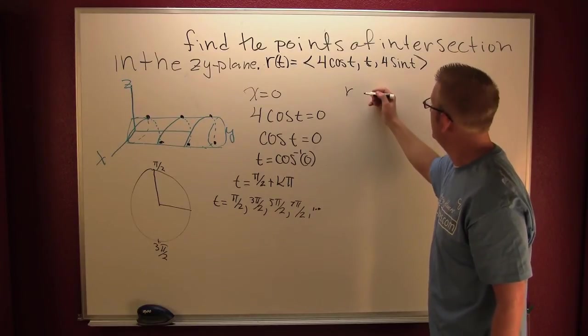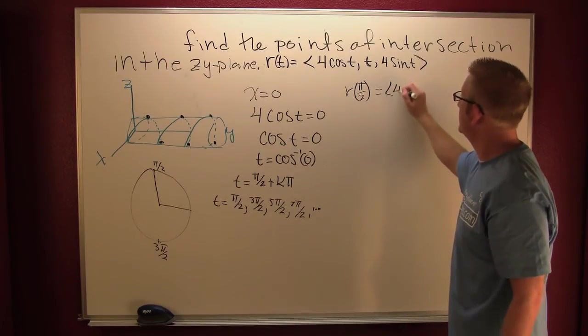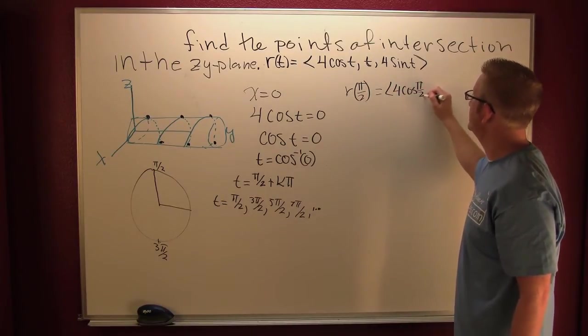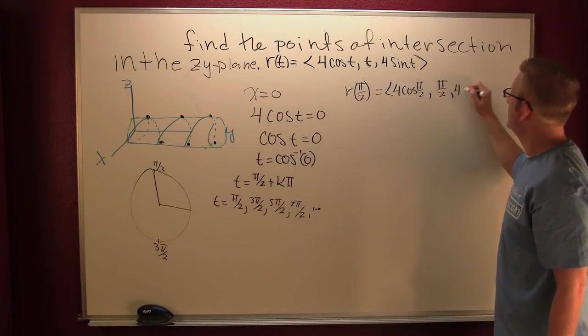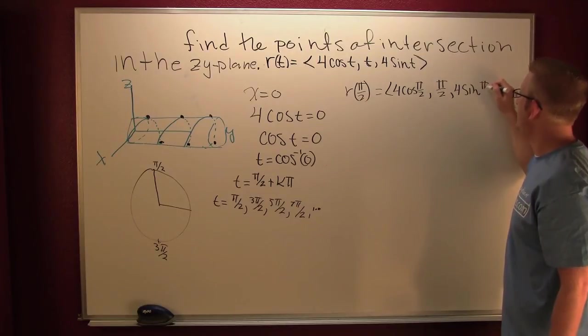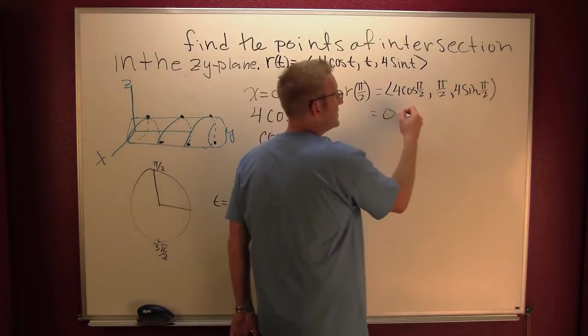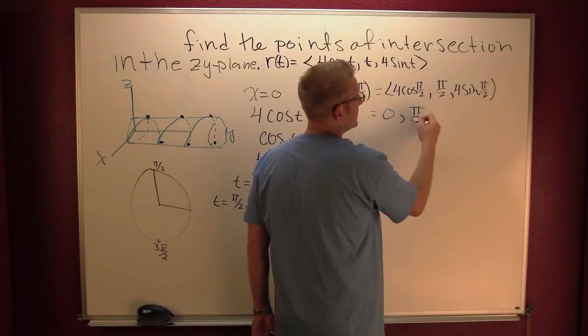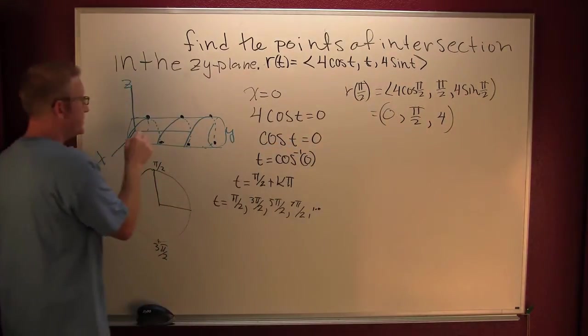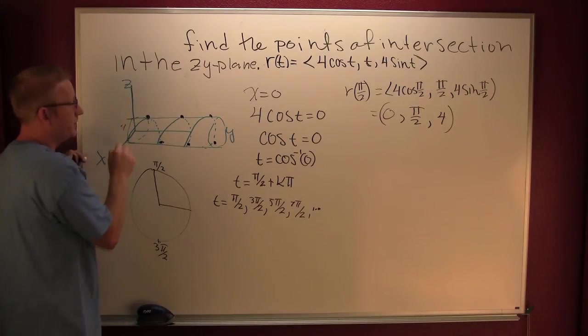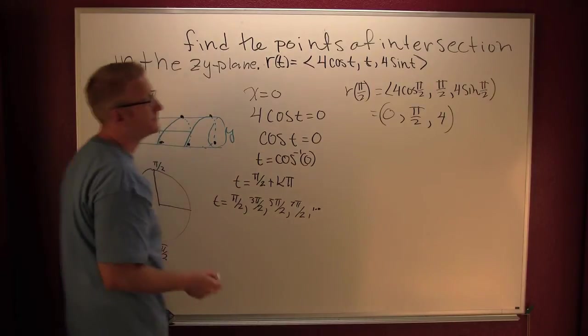So then my r of pi over 2. This is 4 cosine pi over 2, pi over 2, 4 sine of pi over 2. So we see our first point of intersection, this guy up here. So this is going to be 0, this is going to be 0, pi over 2 and 4. Which is where it should be, since we have a cylinder radius 4, and out pi over 2. Great.